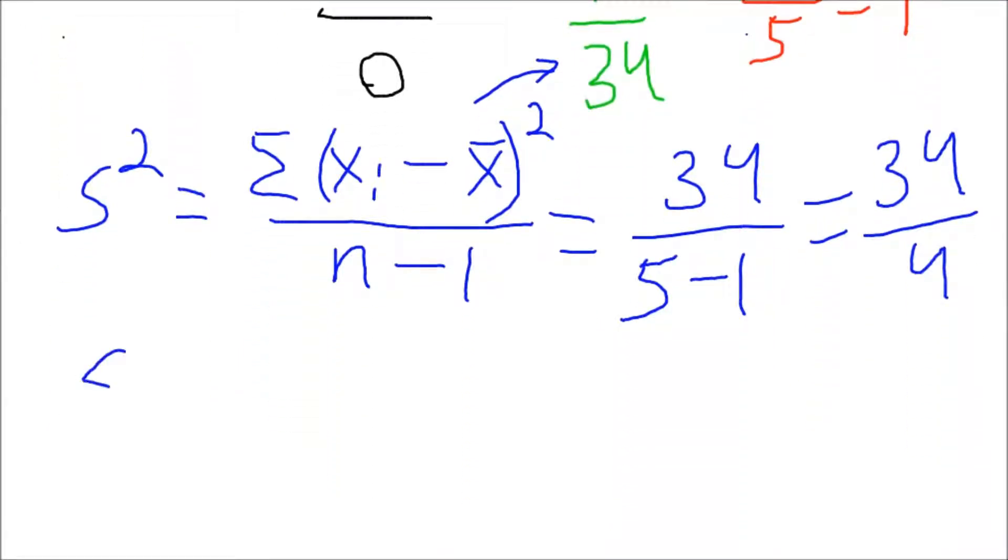And basically our s squared term, sample variance. Let me figure that out on the calculator real quick. It's 8.5, so, decent decimal.